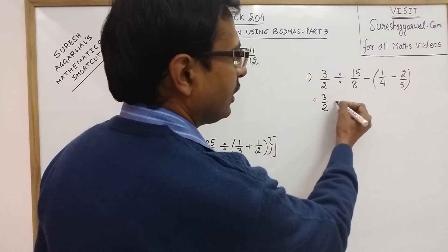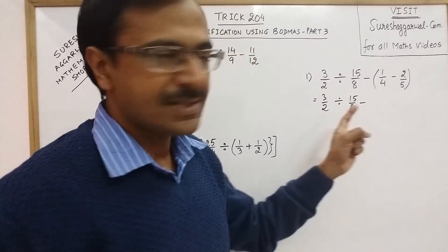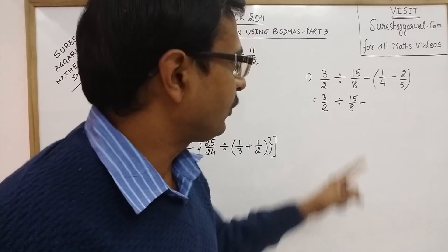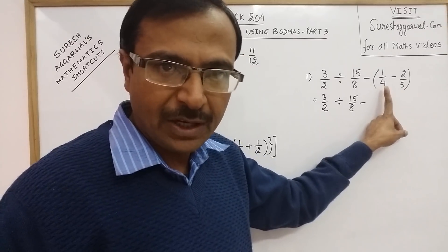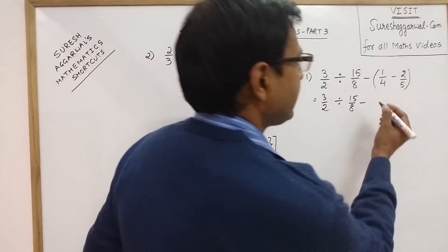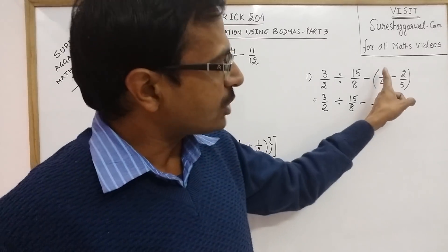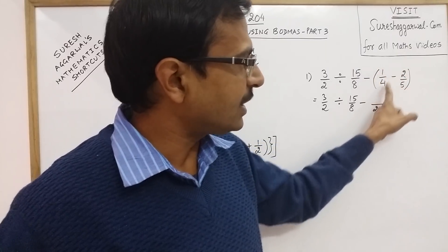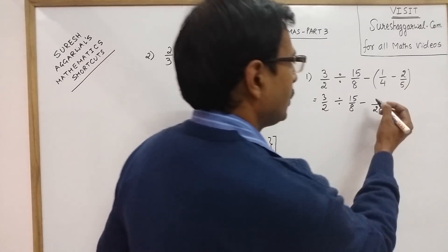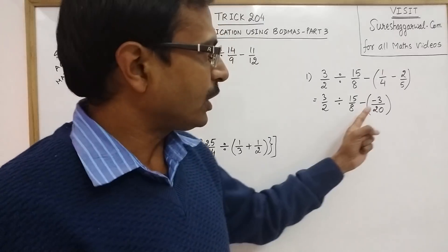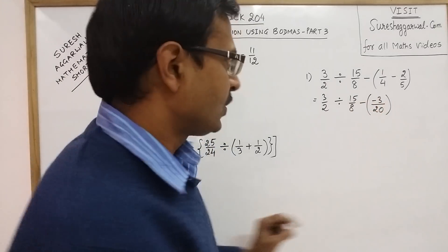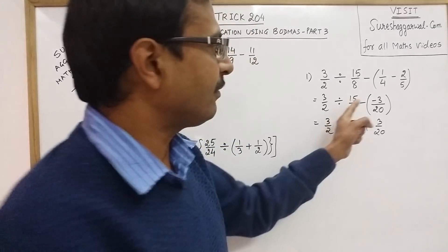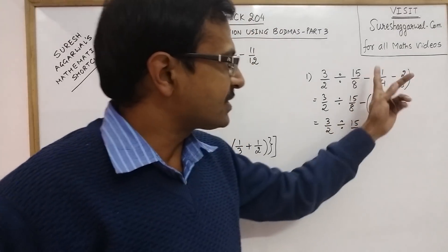The entire problem 3/2 divided by 15/8 minus remains the same. Only thing is we have to first deal with the two rational numbers in the bracket. If you notice, 4 and 5 are co-prime numbers. They do not have any common factor between them. So the LCM will be 20, and just cross multiply: 1 into 5 is 5, minus 4 into 2 is 8. So 5 minus 8 gives you minus 3. In the next step, this becomes plus 3/20. Negative negative becomes plus, and we have got rid of this bracket now.